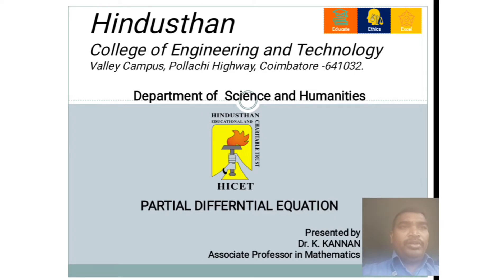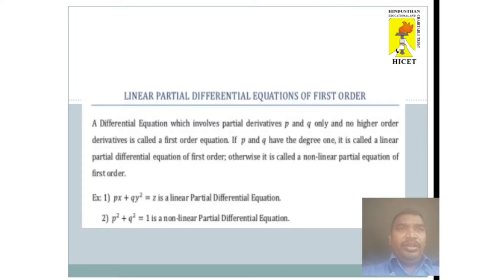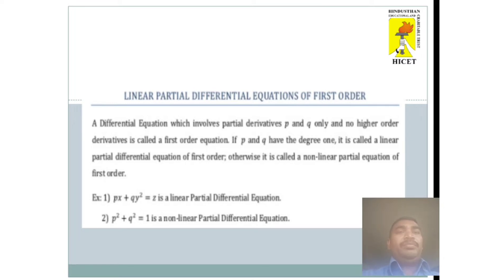In this section, I am going to discuss about the linear partial differential equations of the first order. A linear partial differential equation of the first order involves the partial derivatives P and Q only, and no higher order derivatives. If P and Q have degree 1, it is called a linear partial differential equation of first order. Otherwise, it is called a nonlinear partial differential equation of first order.